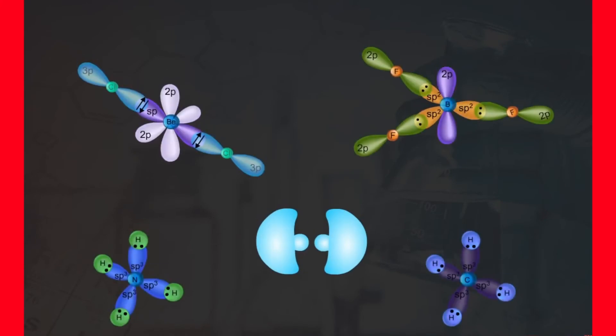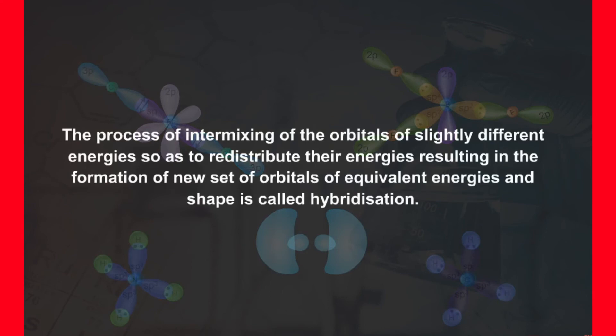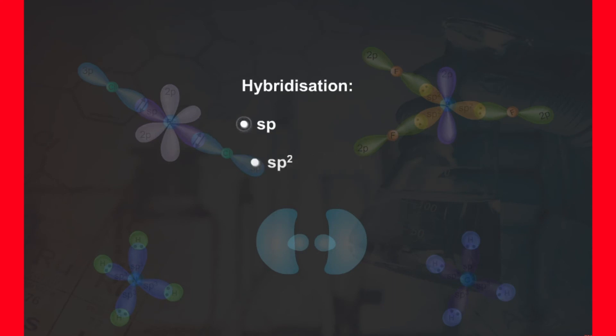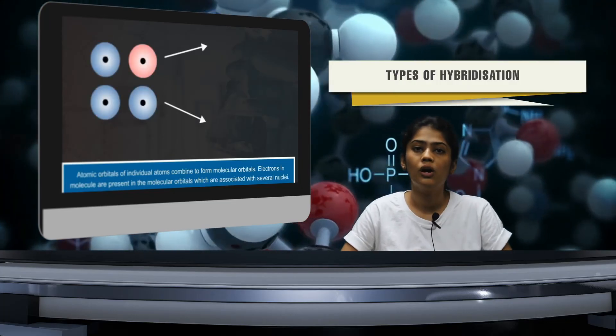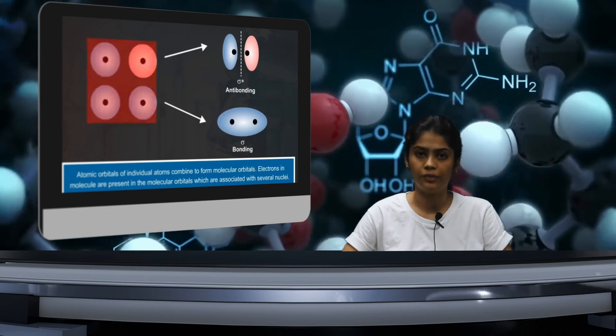In order to explain the characteristic geometrical shapes of polyatomic molecules, the concept of hybridization is used. The process of intermixing of orbitals of slightly different energies, so as to redistribute their energies resulting in the formation of a new set of orbitals of equivalent energies and shape, is called hybridization. Based on the type and number of orbitals, hybridization can be subdivided into five main types.